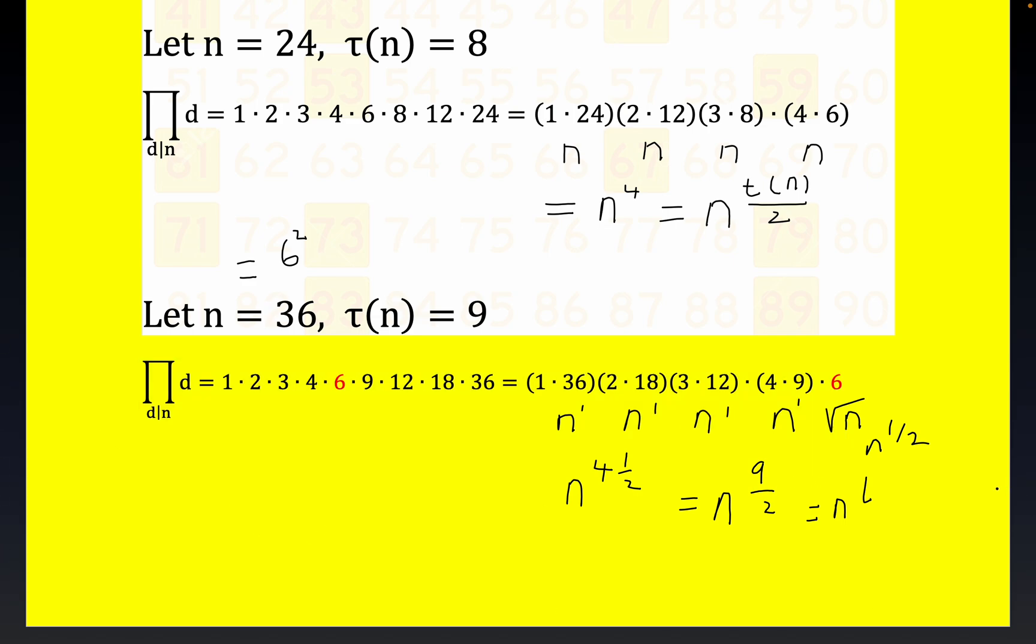Remember our tau of n is nine because we have 1, 2, 3, 4, 5, 6, 7, 8, 9 divisors. So this is n to the tau of n quantity divided by 2. Again, not rigorous but hopefully convincing. The same kind of thing would happen for any non-square or any square over and over, so again I didn't use a lot of notation, this doesn't constitute a rigorous proof but hopefully a convincing proof nonetheless.